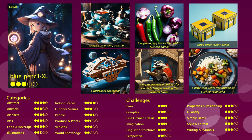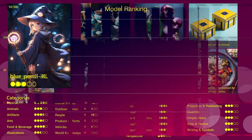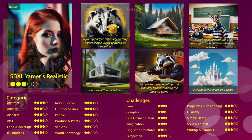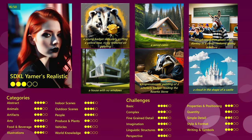Then comes Blue Pencil XL, which performed exceptionally well at abstract scenes and gave me a solid overall impression. I wasn't sure if I should put it into B or C tier, but due to some weaknesses I decided to put it into C. Next is SDVN6 Real XL, which is not really a bad model, but didn't convince me when it comes to quality and it wasn't easy to get some really good results. For that reason, I am putting it into D tier. SDXL Yammer's Realistic gave me a bit of a better impression. It is a solid model, nothing outstanding, but you can get quite good results. Overall, I would put it into the C tier.